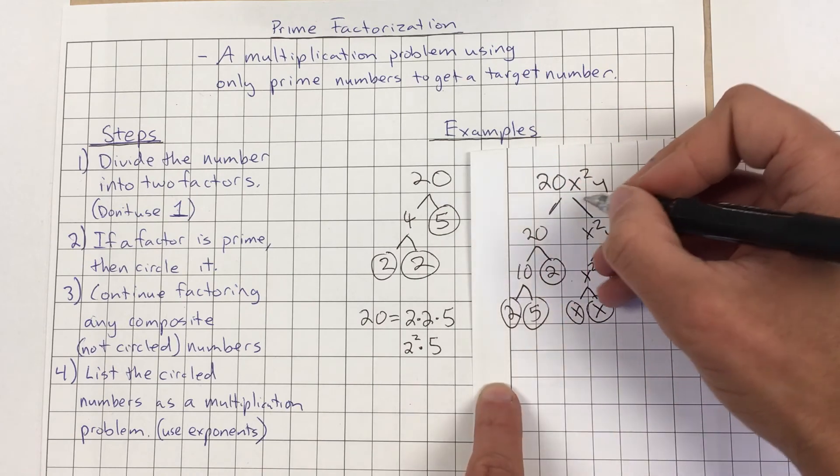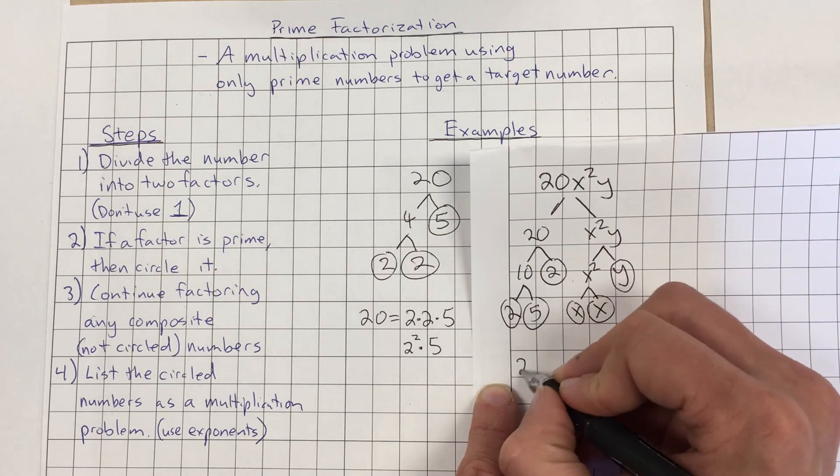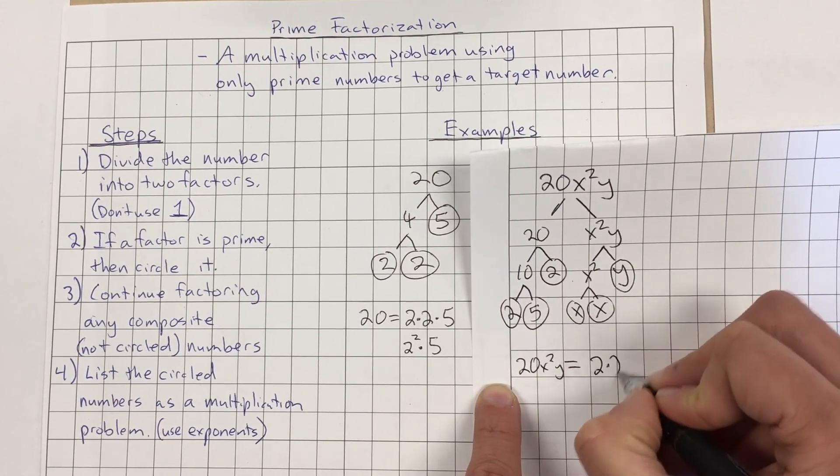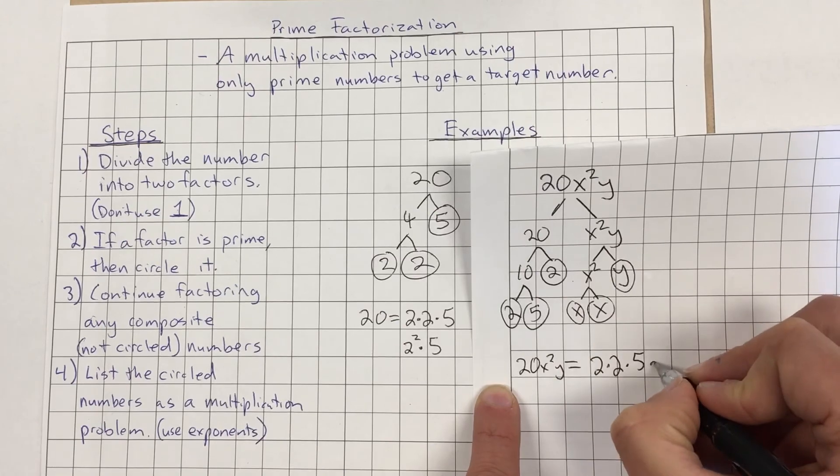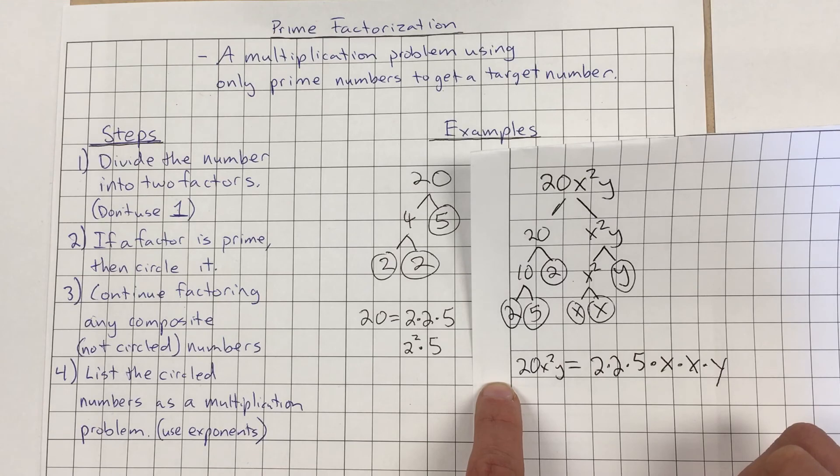Then if we had to list the prime factorization for 20x squared y, we would simply list out the things. We could say 20x squared y equals 2 times 2 times 5 times x times x times y, right? And that's what we can then use.